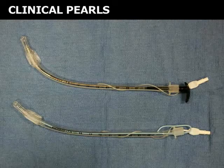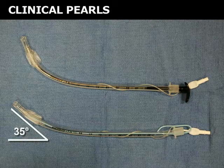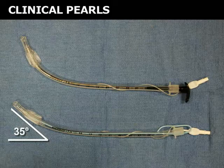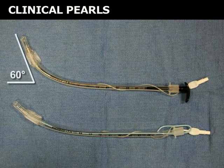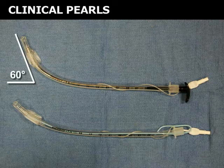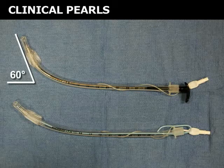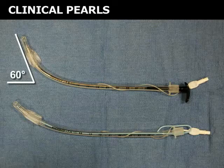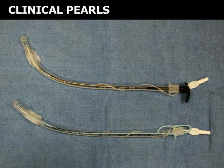When performing traditional direct laryngoscopy, it is recommended that the endotracheal tube and stylet be bent at a 35 degree angle. Because GlideScope laryngoscopy does not require a direct view of the glottic opening, the endotracheal tube and GlideScope rigid stylet are bent at a 50 to 60 degree angle to facilitate intubation while maintaining a view of the vocal cords on the portable screen.